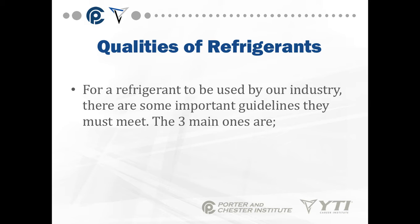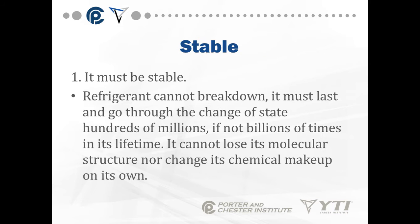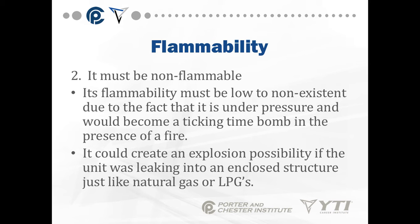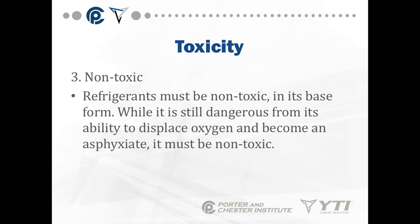We're going to be talking about refrigerants throughout this course. For a refrigerant to be used by our industry, there are some important guidelines. It must be stable — refrigerant cannot break down on its own; it has to go through the change of state billions of times without losing its molecular structure. It must not be flammable — flammability must be very low to non-existent, as it's under pressure and would become a serious explosion risk in the presence of fire or if leaking into an enclosed structure.